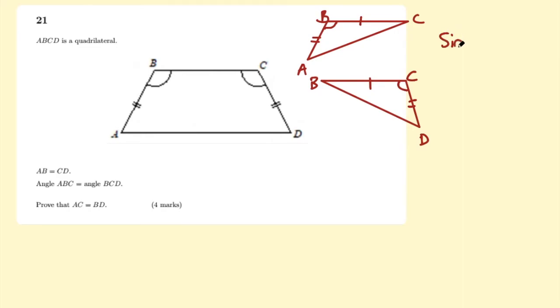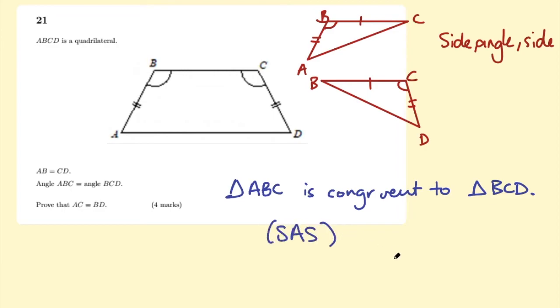And we call that rule side angle side. So we can say that triangle ABC is congruent to triangle BCD due to the side angle side rule. Put that in brackets to show how you came up with that. And then we can say therefore side AC equals BD.